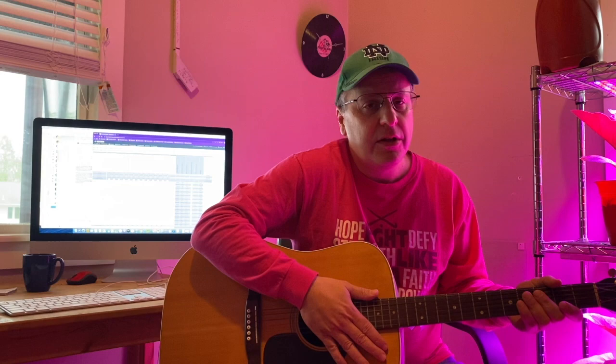Okay so today you have a program you're going to be using where you'll be testing two factors. You'll be testing the linear density so you'll have six different strings that are different masses per meter and you'll also be changing the tension in the string by using the little knobs on the guitar to change how much tension there is and we'll see how that affects our speed. So how does tension affect speed? How does the density of the string affect the speed? So let's take a look at how we're going to do this.